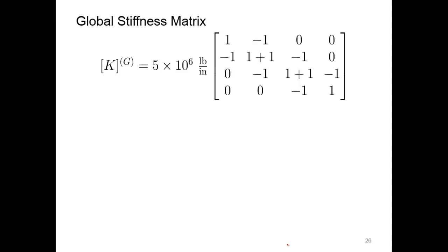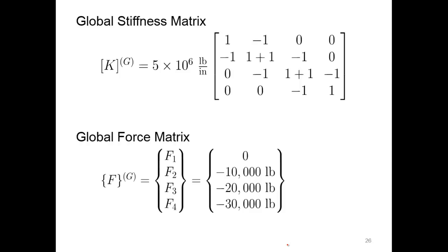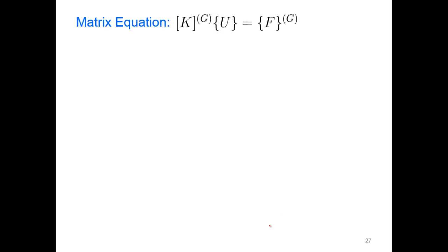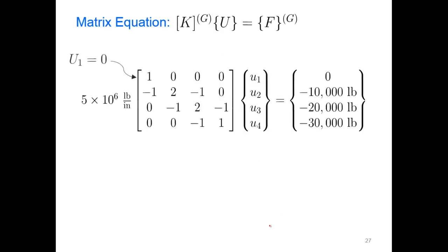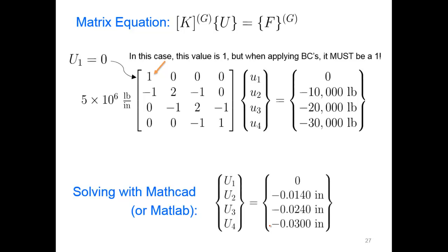We set up our global force matrix: the force at node one is zero, then we have negative 10 kips, negative 20 kips, and negative 30 kips at node four. Setting up the matrix equation and applying our boundary condition — no deflection at node one since it's in contact with the ground — we put one in that column and zeros in the rest. Solving with MathCAD or MATLAB, we come up with the deflections at our different nodes in the column.